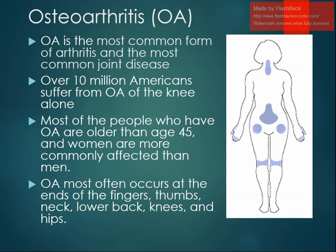As physiotherapists in clinical practice, we will mostly encounter 70 to 80 percent of patients suffering from hip or knee pain due to osteoarthritis. Most people who have OA are older than age 45, and women are more commonly affected than men. It also often occurs in the hands, fingers, thumbs, and lower back, but knees and hips are the most common sites.